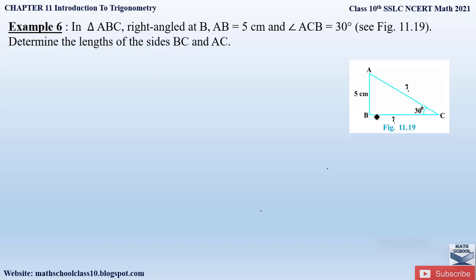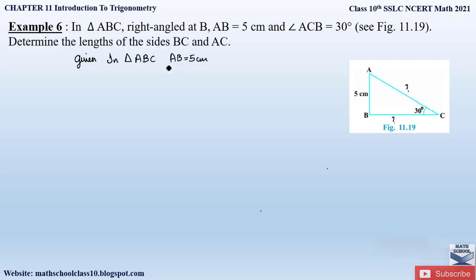Whenever a right angle triangle comes into picture, the first thing that comes to mind is the Pythagorean theorem. To apply the Pythagorean theorem, two sides must be given so we can determine the third side. But here they have given only one side and one angle, so first let us write down what is given in the question: AB = 5 cm and angle ACB = 30 degrees.